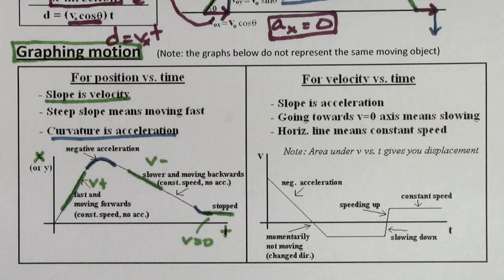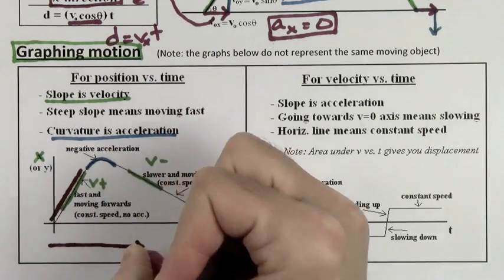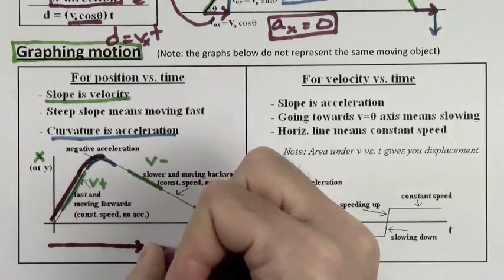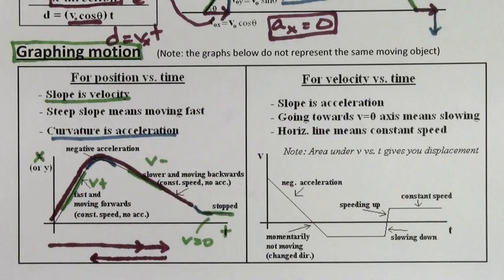This graph tells you that the object started with constant positive velocity, moving forward, it finally slowed to a stop. Starts to speed up in the negative direction and maintains negative velocity going backwards. Slows to a stop and stays there. The amount the object ended up from its initial position is the displacement.